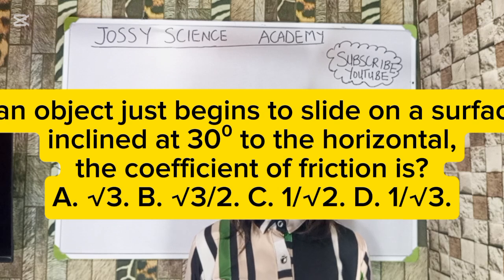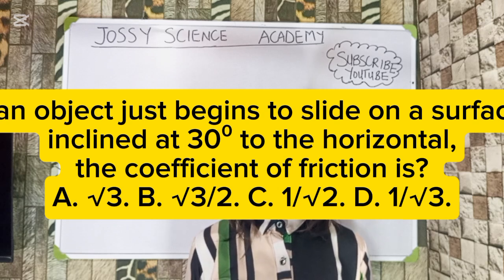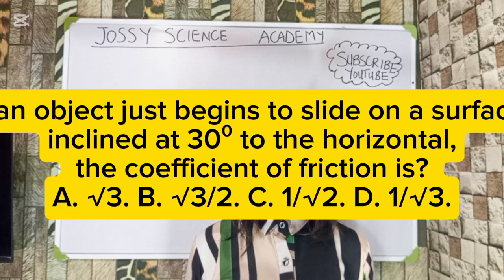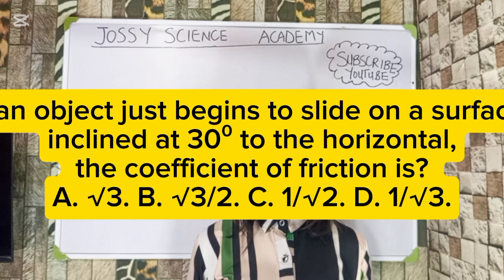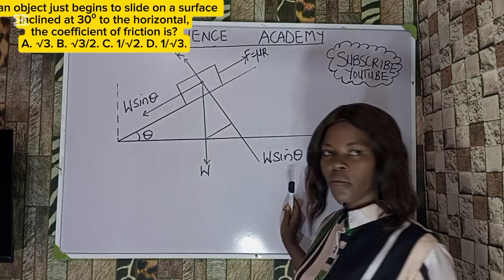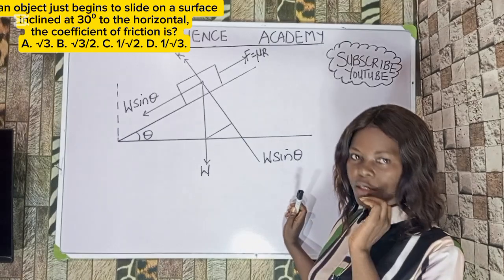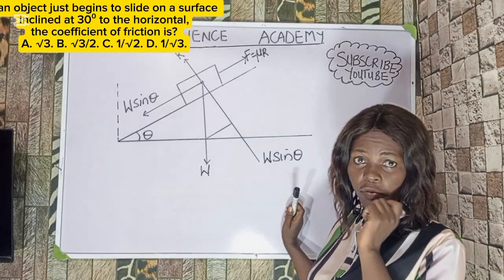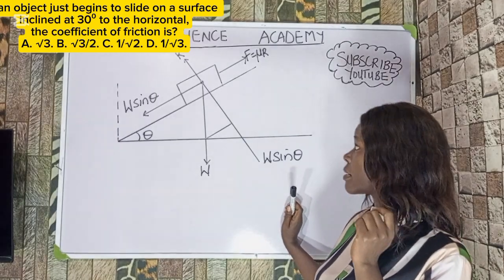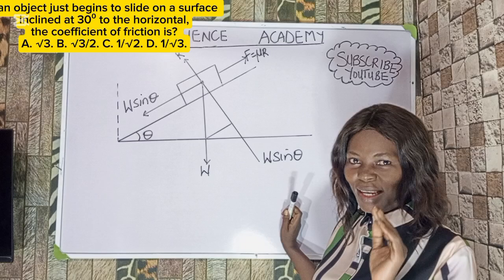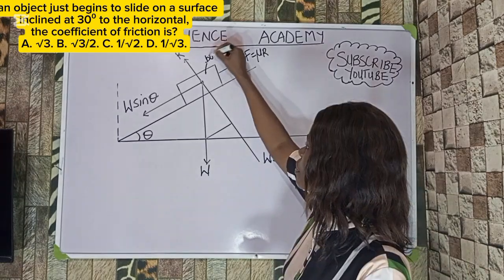If an object just begins to slide on a surface inclined at 30 degrees to the horizontal, the coefficient of friction is what? Options: A) √3, B) √3/2, C) 1/√2, D) 1/√3. Now I want to explain the concept here so you can find the coefficient of friction. Let's look at the forces acting on an inclined plane.